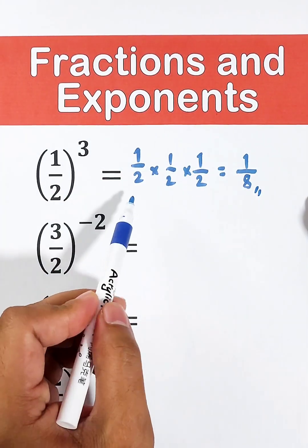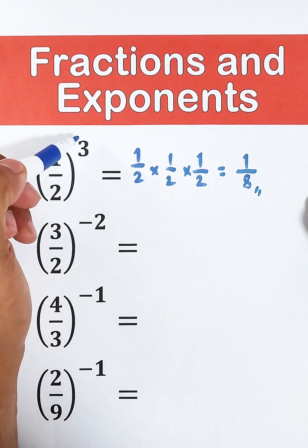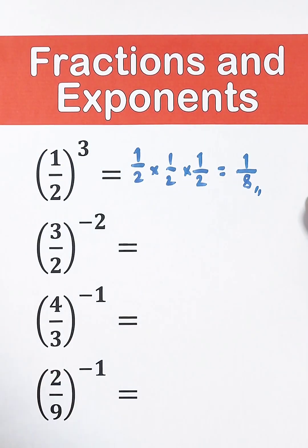The reason why we multiplied 1 half 3 times is because the exponent 3 implies that we need to multiply the base 3 times. Next, let's go with the next example.